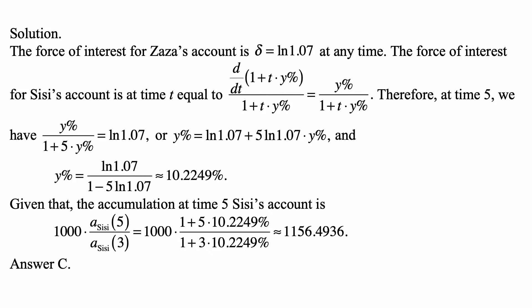Setting the forces of interest equal: Y% divided by (1 plus 5 times Y%) equals the natural logarithm of 1.07. Solving, Y% equals ln(1.07) plus 5·ln(1.07)·Y%, so Y% equals ln(1.07) over (1 minus 5·ln(1.07)), which is approximately 10.2249%.